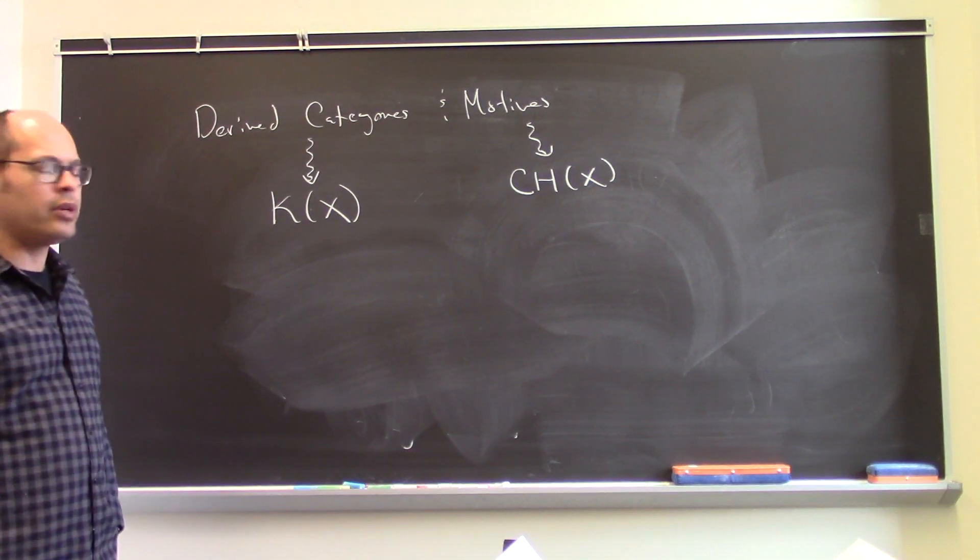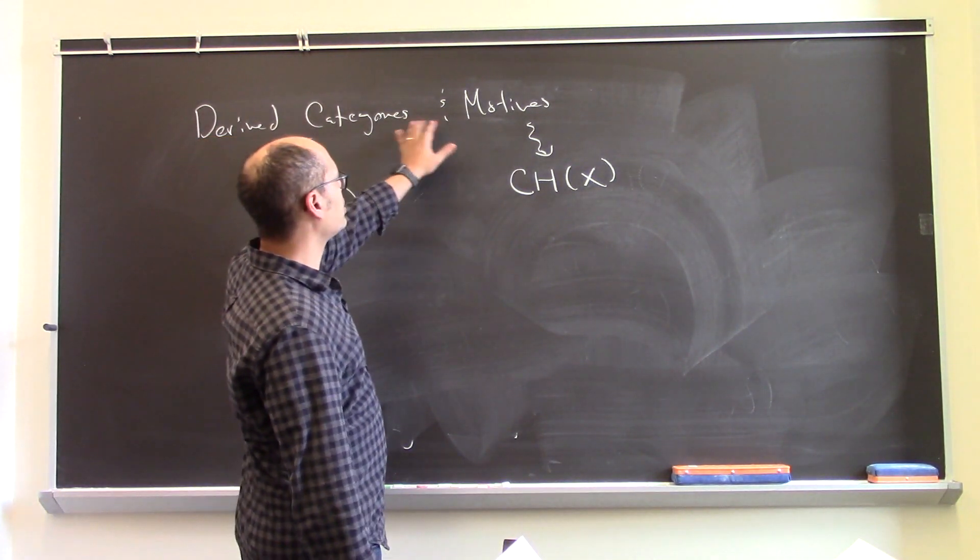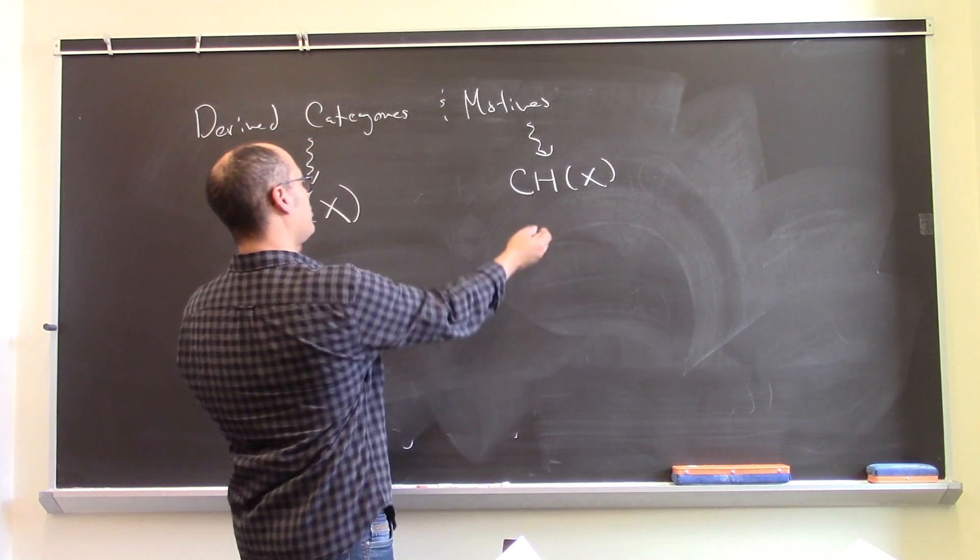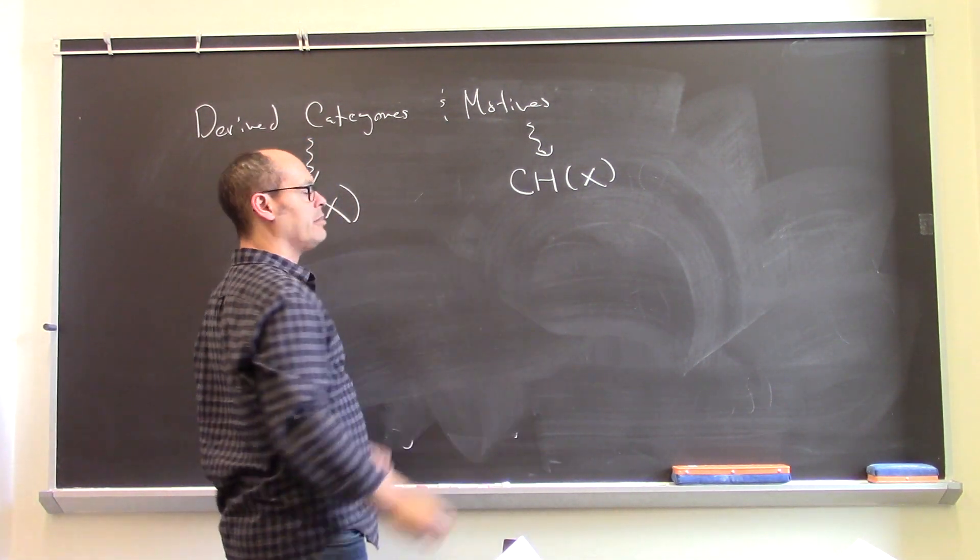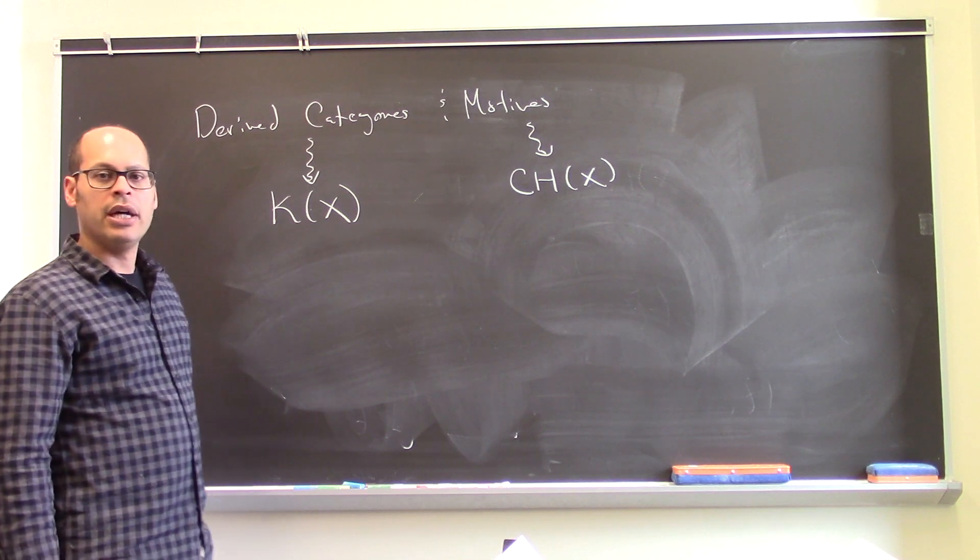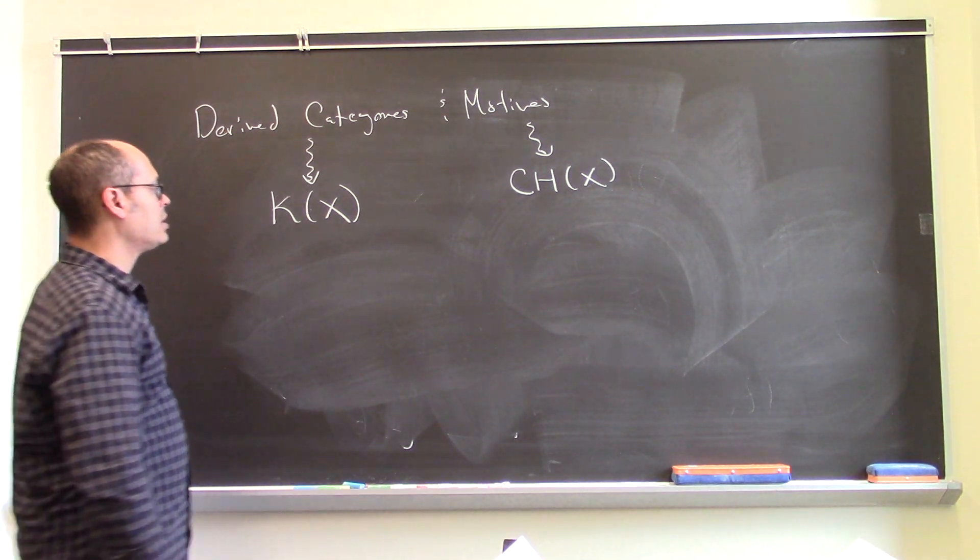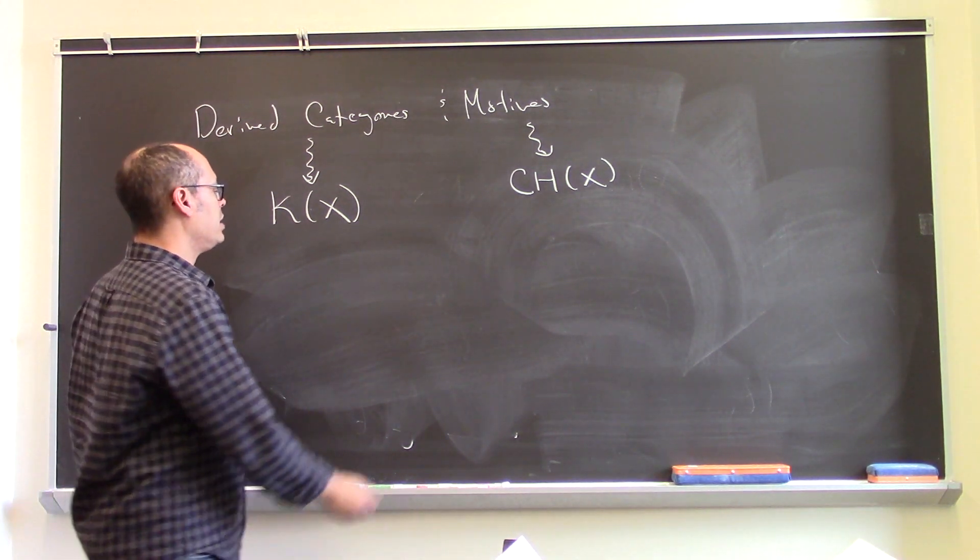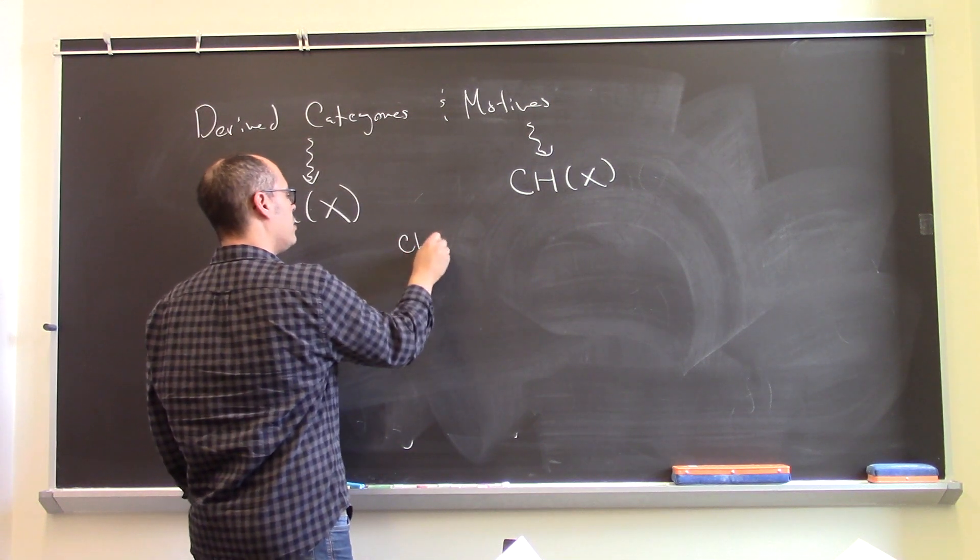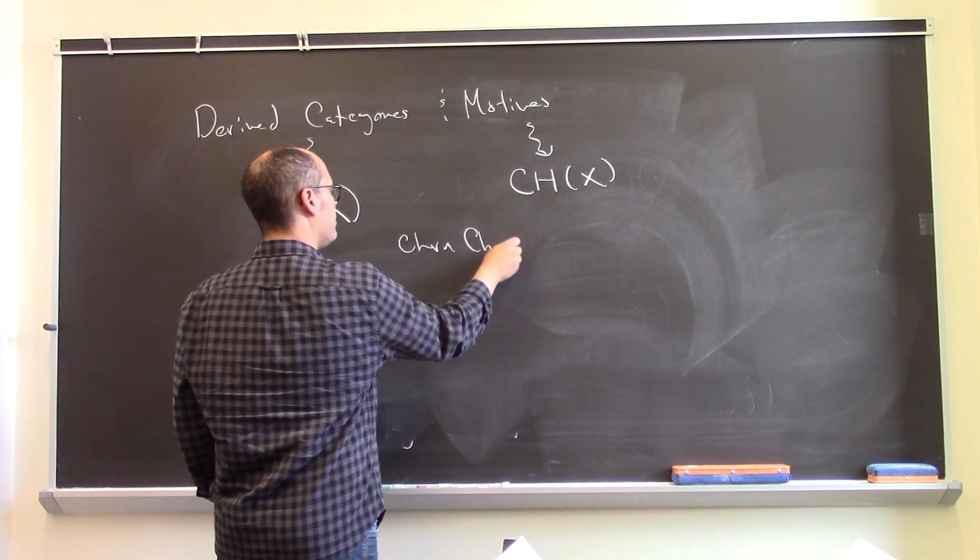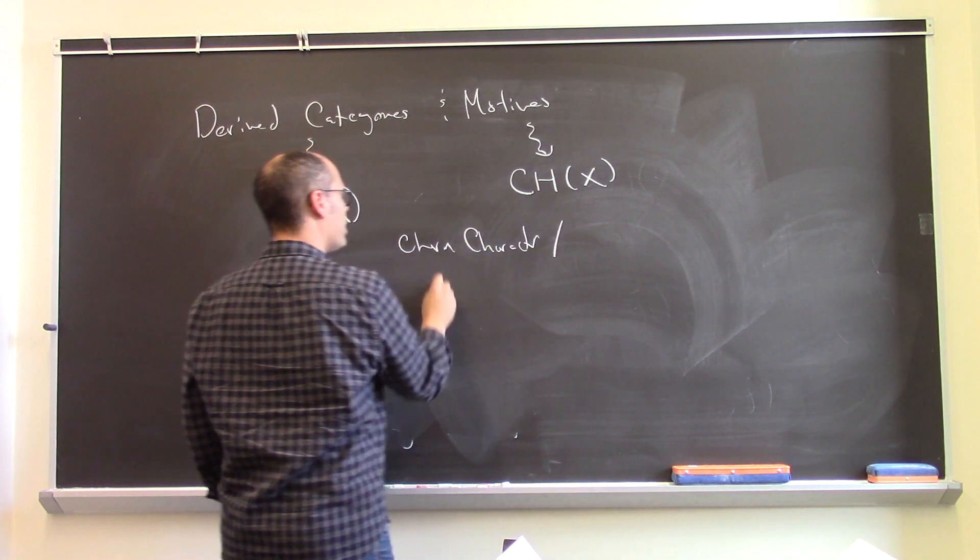And so if you want to understand maybe what the relationship should be up here, then it's natural to consider what's the relationship between these two objects. And here there is a kind of relationship which is given by the Chern characters, or the Chern character, and the Riemann-Roch theorem.